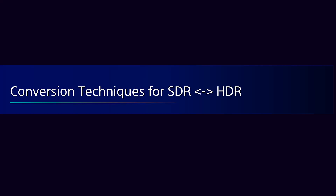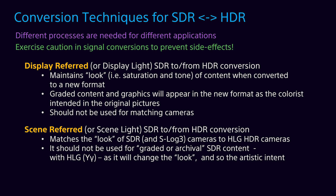I will now discuss the topic of conversion techniques between SDR and HDR signal formats. These techniques are needed for different applications in program production, but they must be carried out with caution to avoid degradations in image quality. Display refer is a conversion process that maintains the look of a program when converted to a different signal format — for example, graded material, commercials, and archival material will appear in the new format as the colorist intended. Scene refer is a conversion technique successfully applied in matching SDR to HDR cameras, as the objective is to replicate the scene light captured by the cameras. We can also use scene refer techniques for graded material, but we must pay attention to look changes which can happen when working in a standard HLG environment.